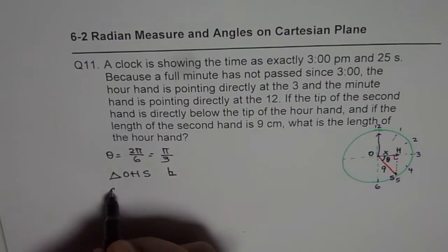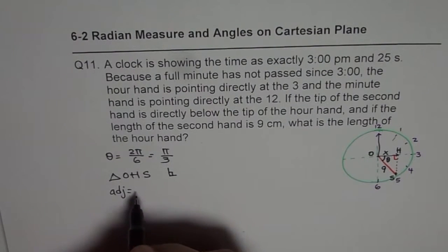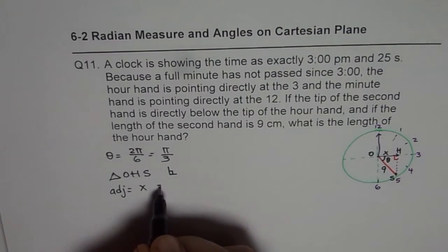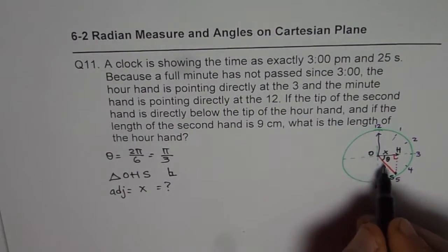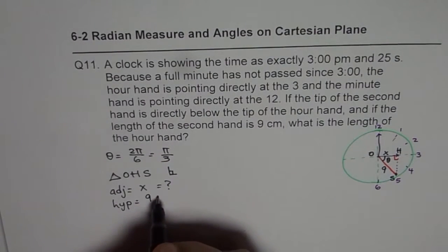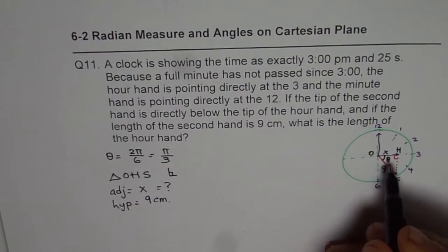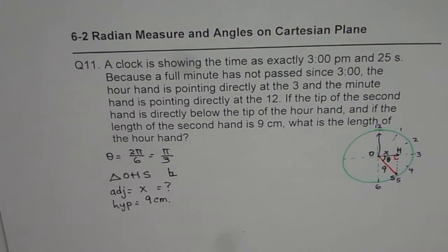Now in this triangle, we know the adjacent and the hypotenuse. Here we know adjacent side which is equal to x which we need to find. And we know hypotenuse which is 9 centimeters. And we know the angle theta which is pi by 3.